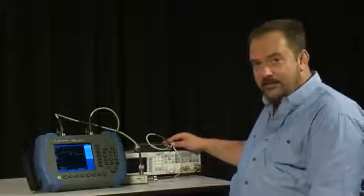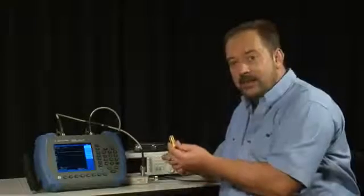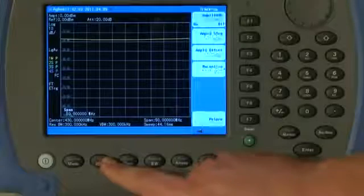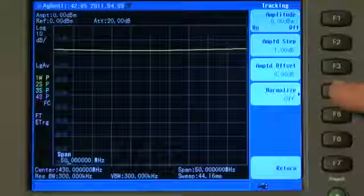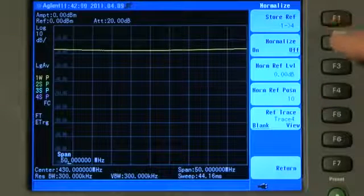So to perform the normalization, we will disconnect the cable from the filter. We will connect a precision 50 ohm short circuit. We press Measure, and Normalize. Store reference 1 to 4, and Normalize on.